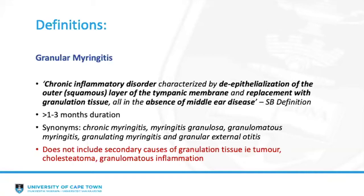Other synonyms include chronic myringitis, myringitis granulosa, granulomatous myringitis, granulating myringitis, and granular external otitis. To clarify, it does not include all forms of granulation tissue or polypoidal tissue found in the ear — it must fit the above definition, as granulation tissue can be secondary to multiple other inflammatory or malignant causes.